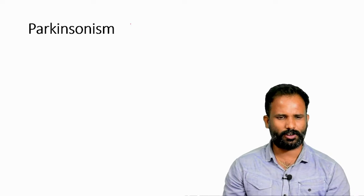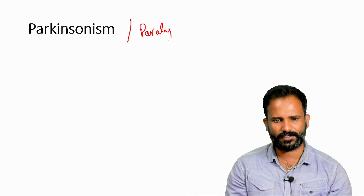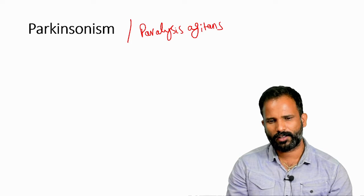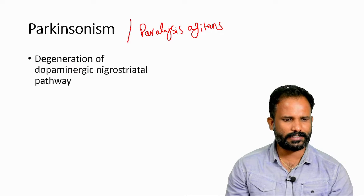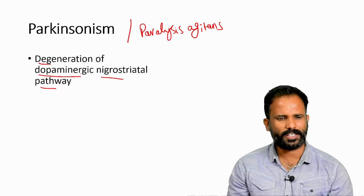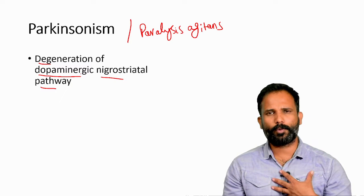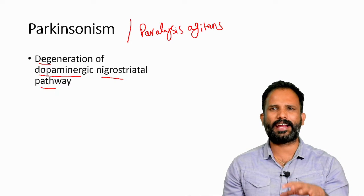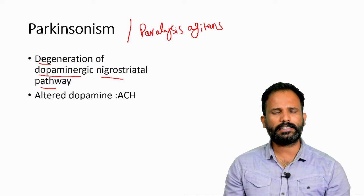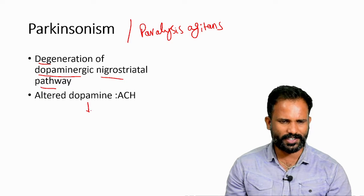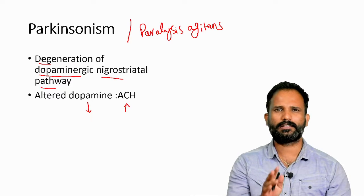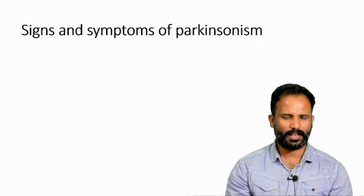Parkinsonism is also called paralysis agitans. It occurs due to degeneration of the nigrostriatal pathway, which uses the neurotransmitter dopamine. The dopaminergic nigrostriatal pathway is destroyed or degenerated. An altered dopamine-acetylcholine ratio — either reduced dopamine or increased acetylcholine — can both cause Parkinsonian symptoms.